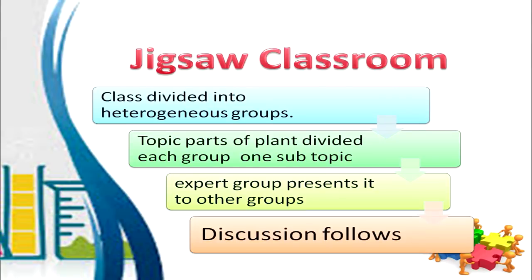Let us look into a few examples of constructivist classrooms. Take the jigsaw classroom, named like different parts of a jigsaw puzzle. The class is divided into heterogeneous groups. Suppose the topic is again parts of the plant — the whole topic is divided into sub-topics, and each group is given one sub-topic. For example, one group is given 'leaf,' another 'root,' and so on. The group working on a particular sub-topic is known as an expert group, and it collects all information related to that sub-topic.